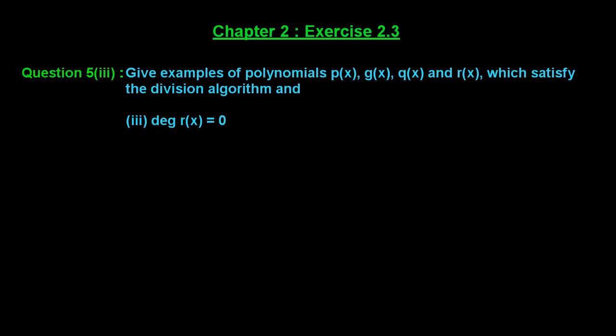Let us see how to solve it. We are given that the degree of the remainder equals 0, which means the remainder is a constant. So let us assume that p(x) = x³ + 1 and g(x), the divisor, equals x².